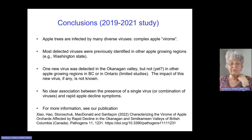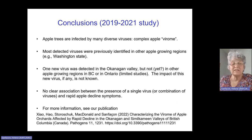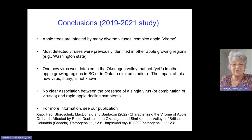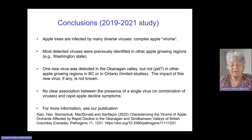We detected one new virus in the Okanagan Valley, and with our collaborators we investigated whether it was also present in the Creston Valley in BC or in Ontario. Those were limited studies and they did not find it — perhaps we haven't looked hard enough yet. I have to mention that even though it's a new virus, we don't know what the impact of this virus is on the health of the tree. Possibly it's just a latent virus that doesn't do much, or it could have a more severe impact. We need to look into this more closely.